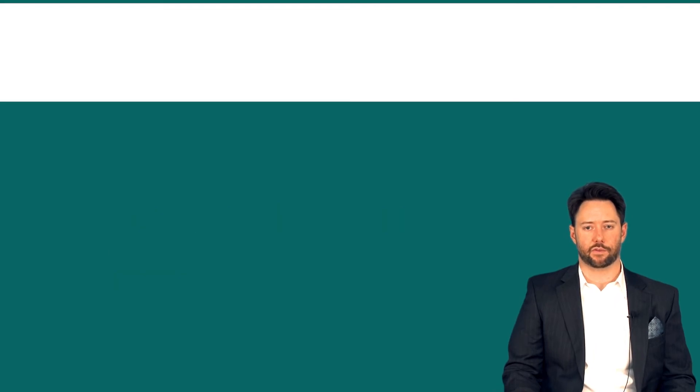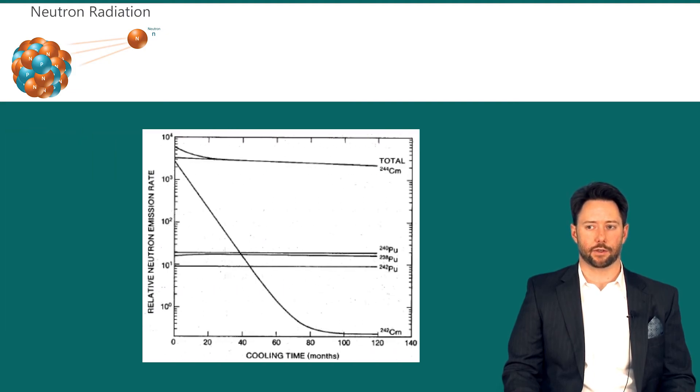Next let's take a look at the spent fuel neutron radiation. We have a figure here showing the neutron radiation of the most active neutron emitters in spent fuel. On the vertical axis we have the relative neutron emission rate in a logarithmic scale, and the horizontal axis is cooling time. So as time progresses, of course, these radioactive neutron emitters are decaying.